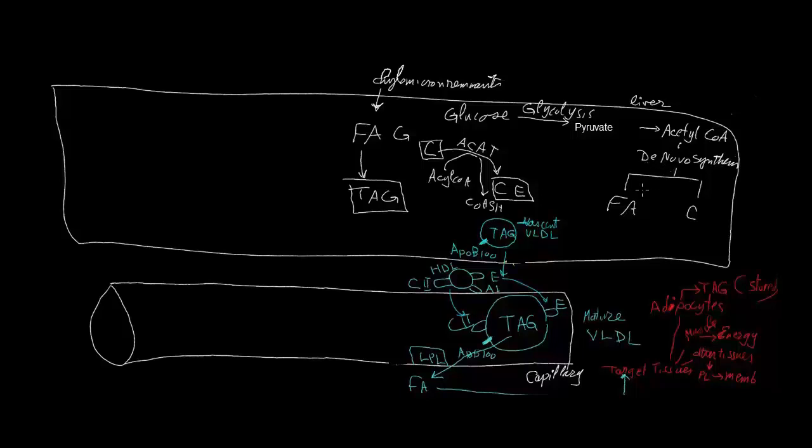The excess acetyl-CoA goes through the processes of de novo synthesis of both cholesterol and fatty acids. This is because the predominance of insulin as a hormone stimulates the de novo synthesis of both cholesterol and fatty acids.